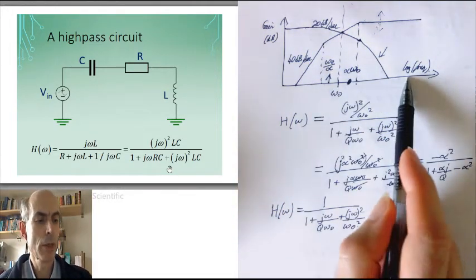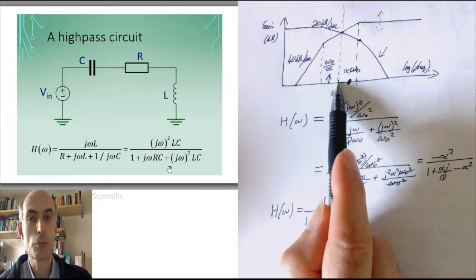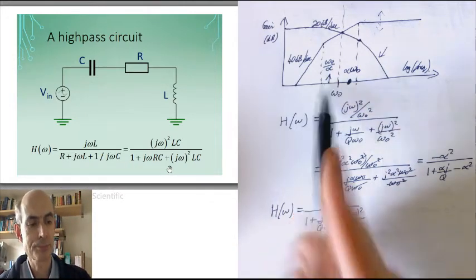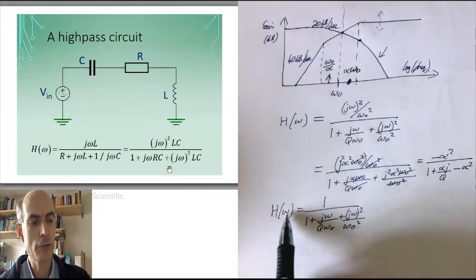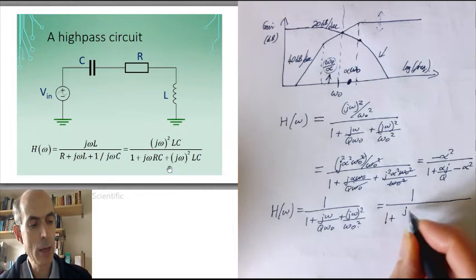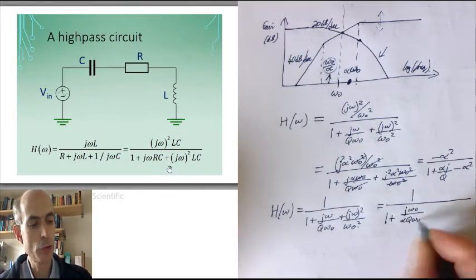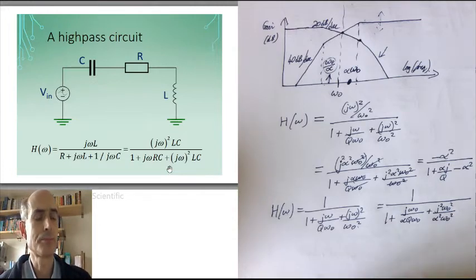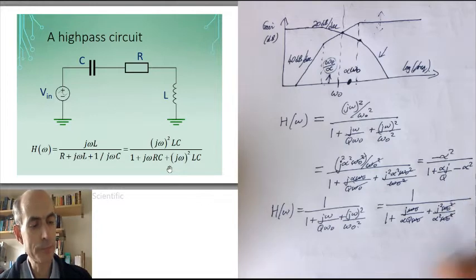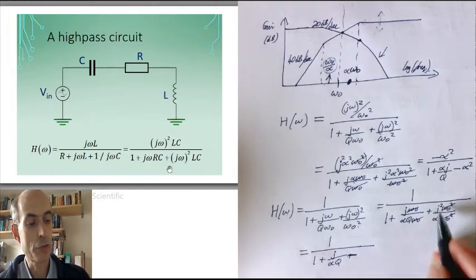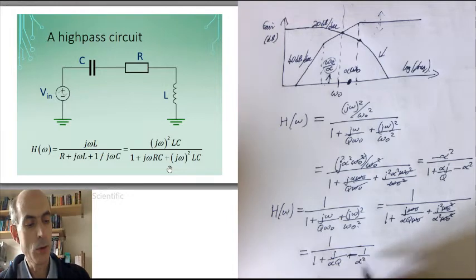Remembering that this is a logarithmic scale, so that multiplying by α will move this point a certain distance in this direction. Dividing by α would move the point the same distance in the other direction. So let's consider what this low-pass filter, what its value would be at this point here. Well that would just be 1 over 1 plus jω₀ over α times qω₀ plus j²ω₀² over α² over ω₀². Again, all of the ω₀s cancel out, and we're left with 1 over 1 plus j over αq plus j² over α², which is 1 over 1 minus 1 over α².